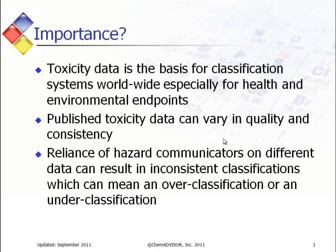So let's get started. Why is toxicity data important in the first place? Toxicity data is the basis for classification systems worldwide, especially for determination of health and environmental endpoints. Published toxicity data itself can vary widely in its quality and consistency. The results of that variation can result in different conclusions for classification, which can result in either an over-classification or an under-classification. Our aim, of course, is to get the classification as accurate as possible. Therefore, you want to utilize the best data.